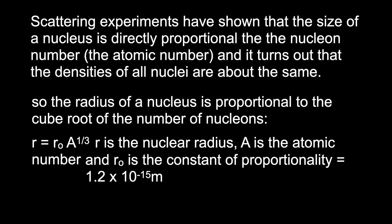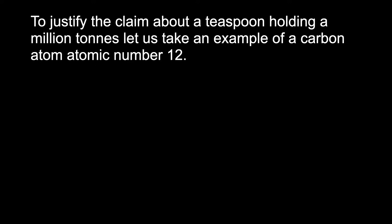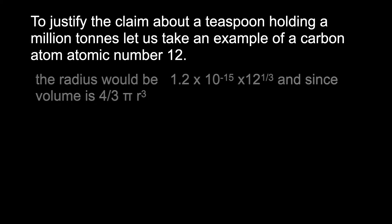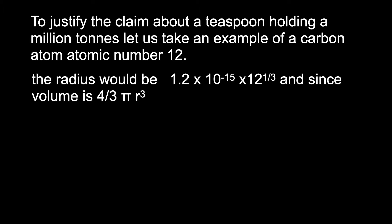To base the calculation on something, we'll take an example of carbon with an atomic number of 12. From the last equation, the radius, therefore, would be the value of the constant multiplied by the cube root of 12.